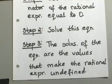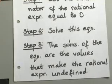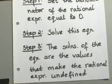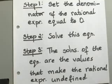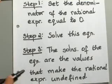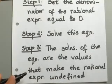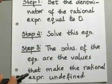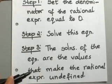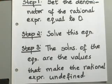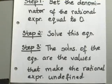So when you take your denominator, set it equal to 0, and come up with whatever values, those values tell us our rational expression is going to be undefined. You would not want to use those values. Let's go ahead and take a look at an example.